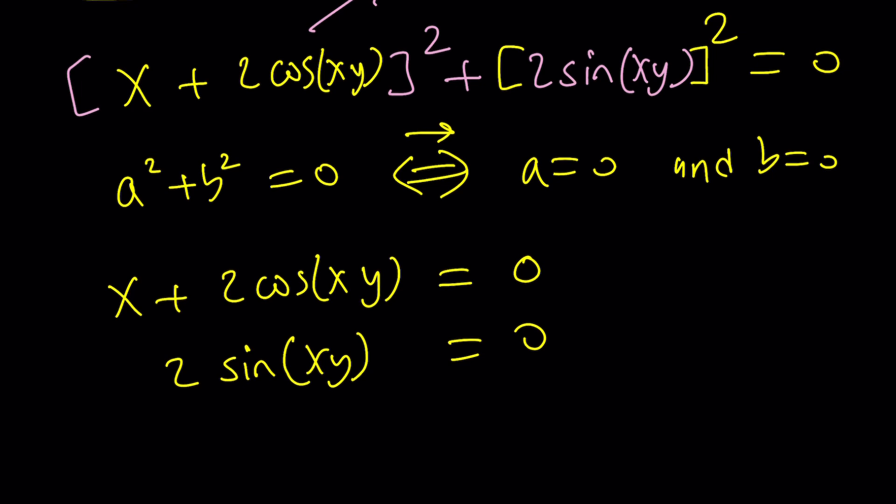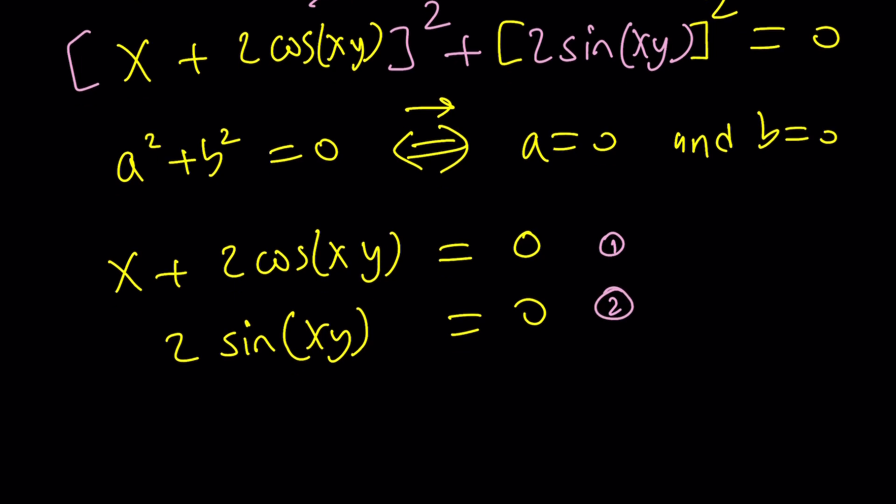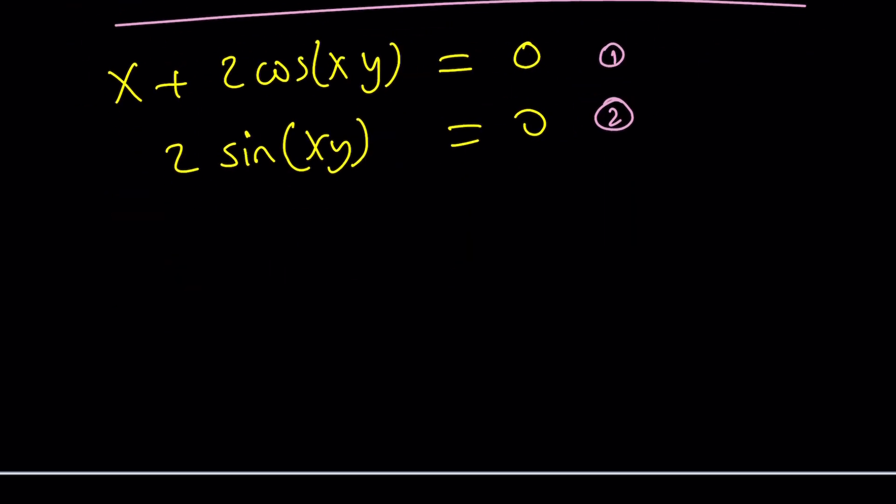Now, take a look at this. The second equation is easy to solve. This is first. This is second, by the way. How do we solve it? What is the thing? Divide both sides by 2. You get sine of xy equals zero.